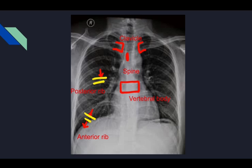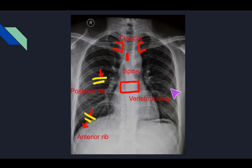It is equally important to examine the bones, looking for any fractures, bony lesions, or other pathologies. Always look at both clavicles to their full visible extent. Look at the spinous processes of the vertebrae and the vertebral bodies as far as they can be visualized. Also examine the ribs — both anterior and posterior. Posterior ribs run more horizontally, while anterior ribs are more oblique in their course.